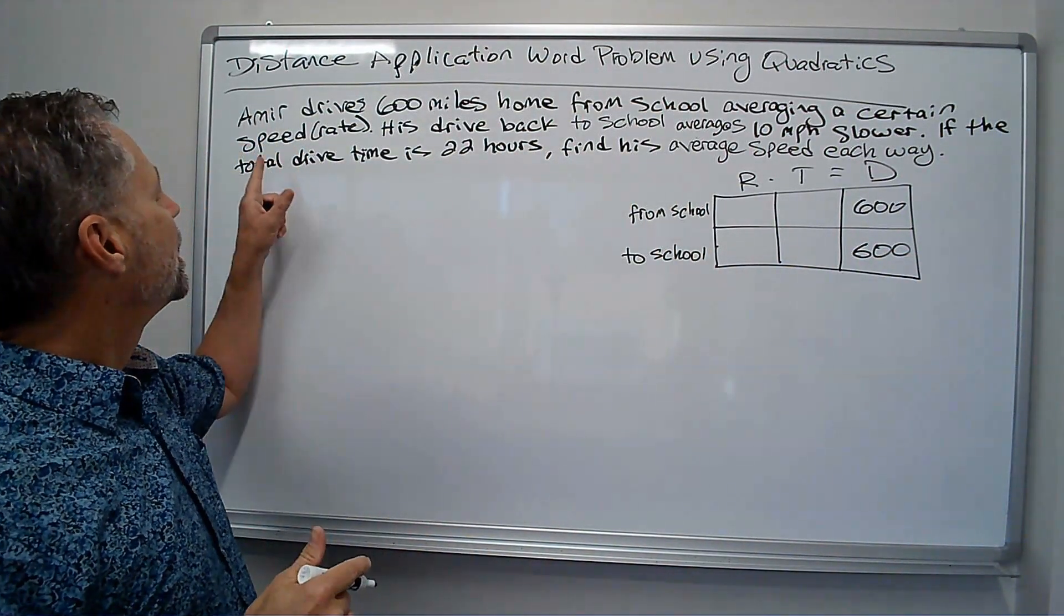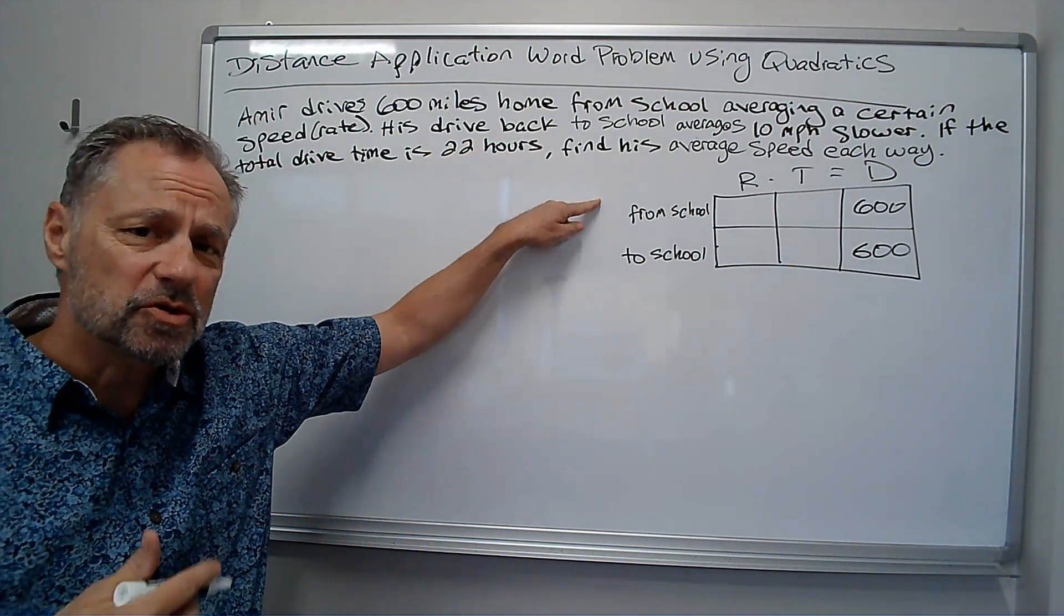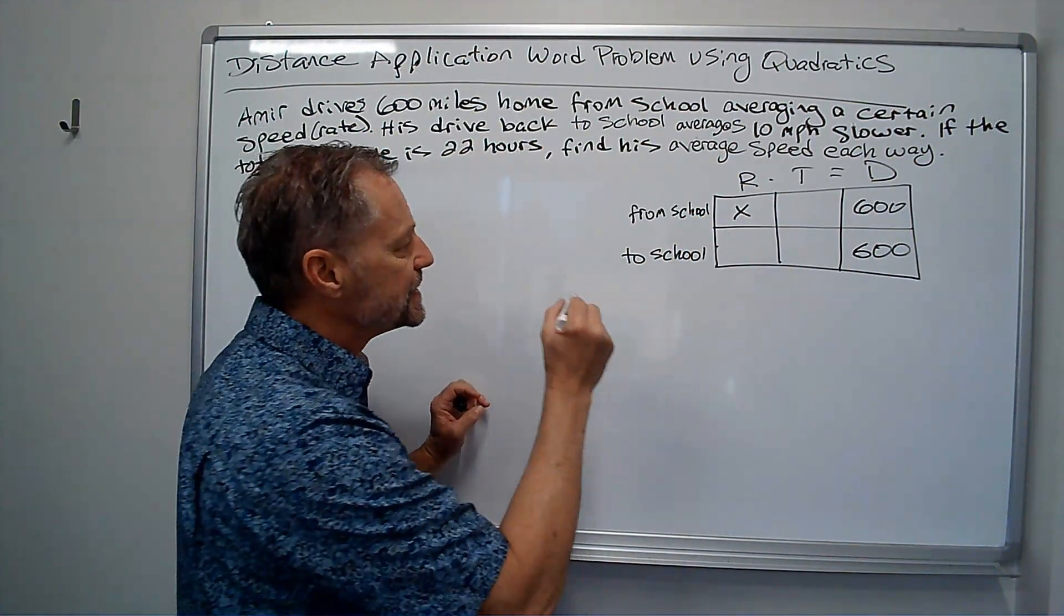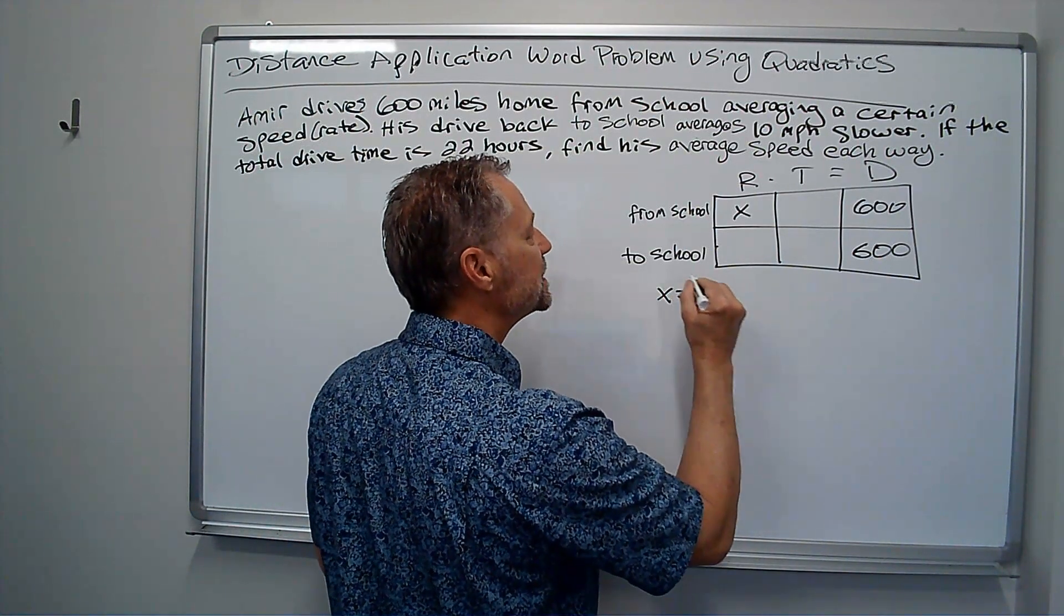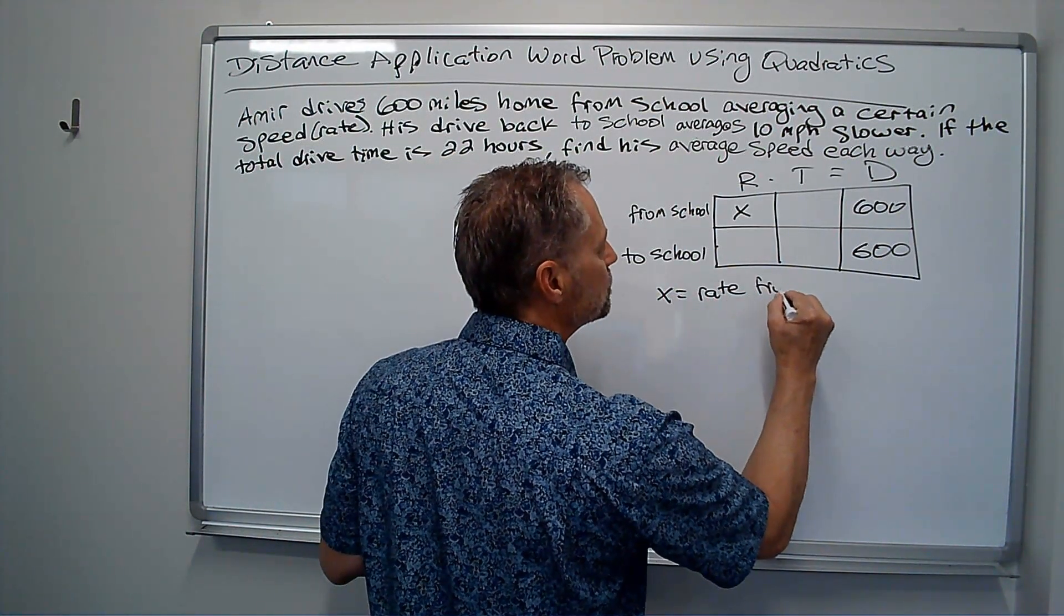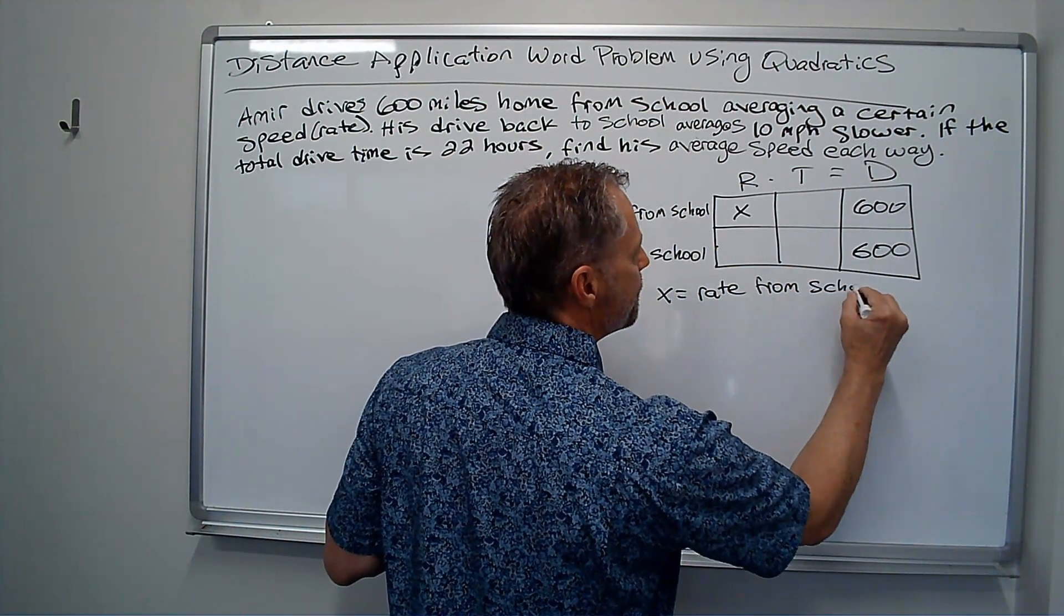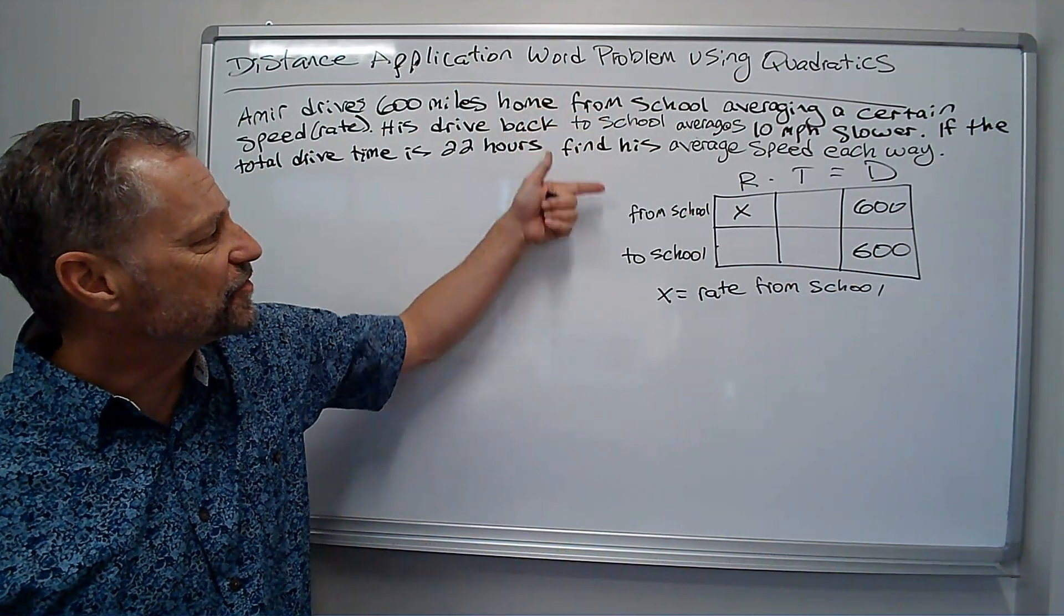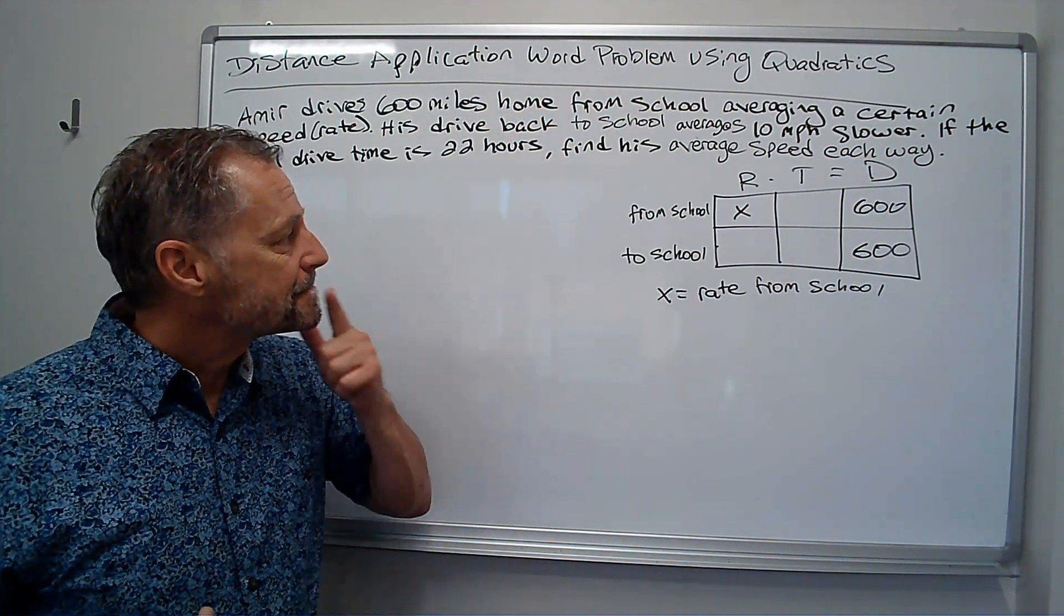Let's see what else we have. He's driving from school at a certain speed or a certain rate. We're just going to call that X. And down here I may even say X equals rate from school. You may say rate home, however you want to do that. But since it says from school, I just labeled it that way.